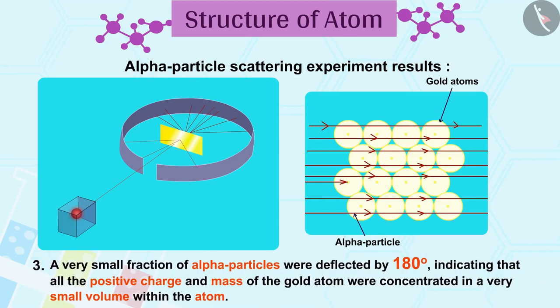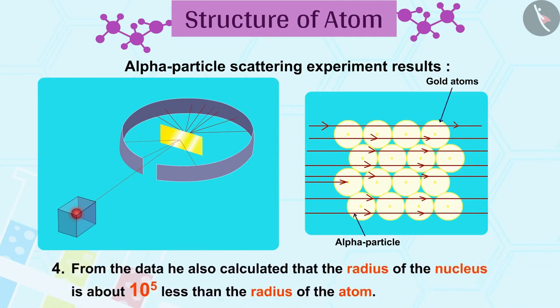3. A very small fraction of alpha particles were deflected by 180 degrees, indicating that all the positive charge and mass of the gold atom were concentrated in a very small volume within the atom.